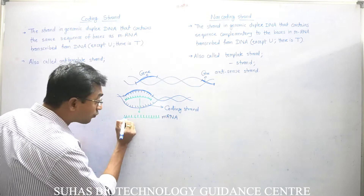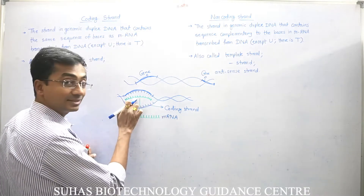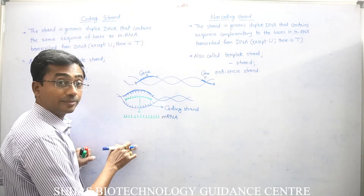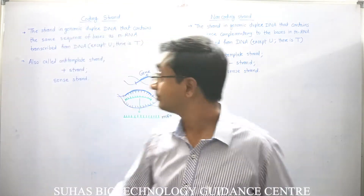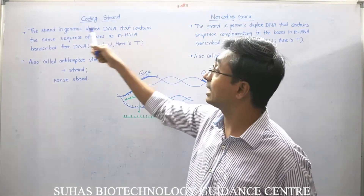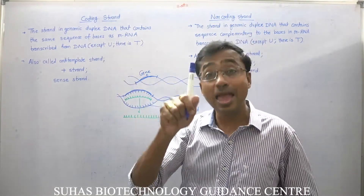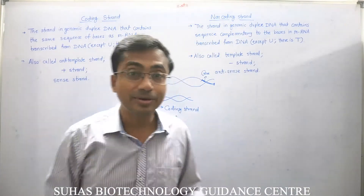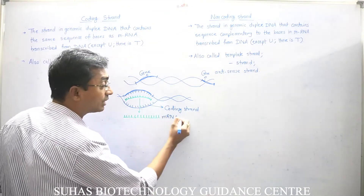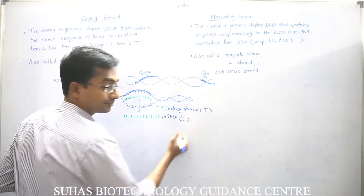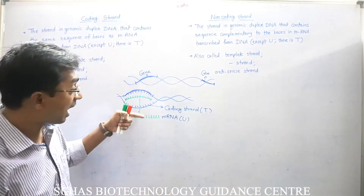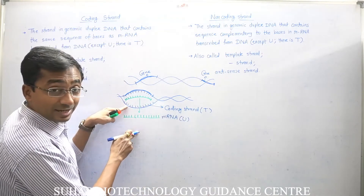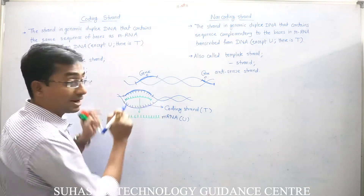The language of codons which is present on mRNA is the same as the language which is present on this opposite strand, and that's why this is the coding strand. The coding strand is the strand in genomic duplex DNA that contains the same sequence of bases as the mRNA transcribed from DNA, except U — there is T — because in RNA we have ribonucleotides with U, but in the DNA strand we have T and deoxyribose sugar, while in the RNA strand we have ribose sugar.